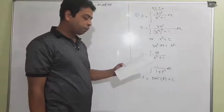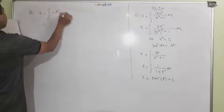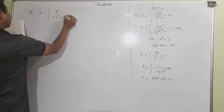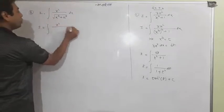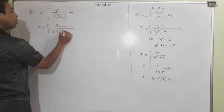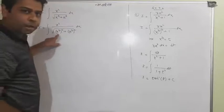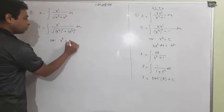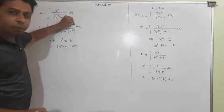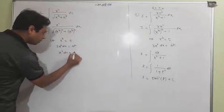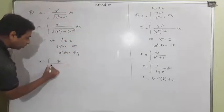Question number eight is x squared upon x to the power 6 plus a to the power 6. Write x to the power 6 as (x cubed) squared, and a to the power 6 as (a cubed) squared. Let x cubed equal t. Differentiating: 3x squared dx equals dt, so x squared dx equals dt by 3.